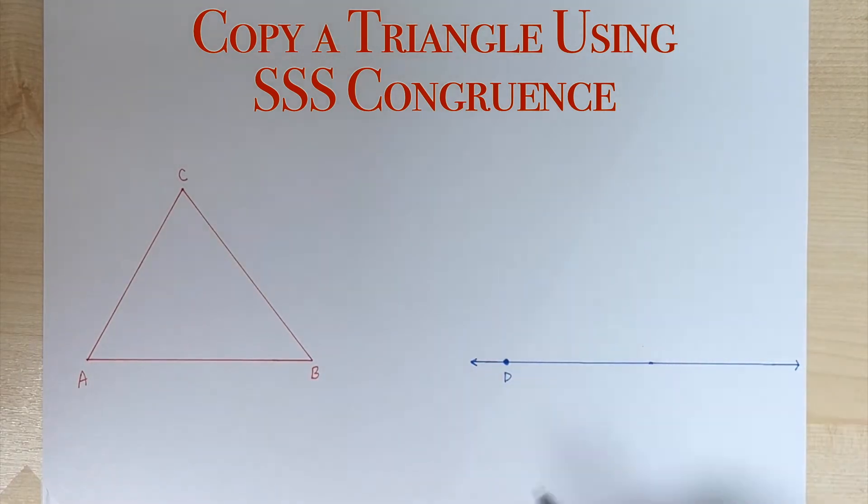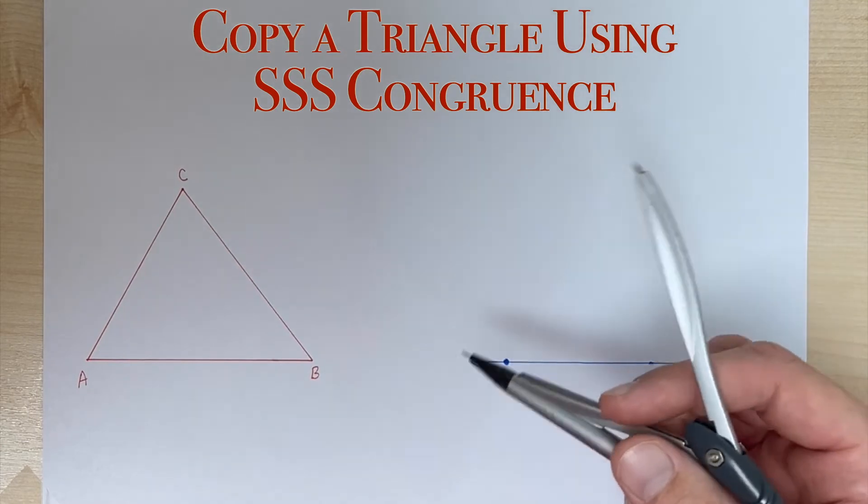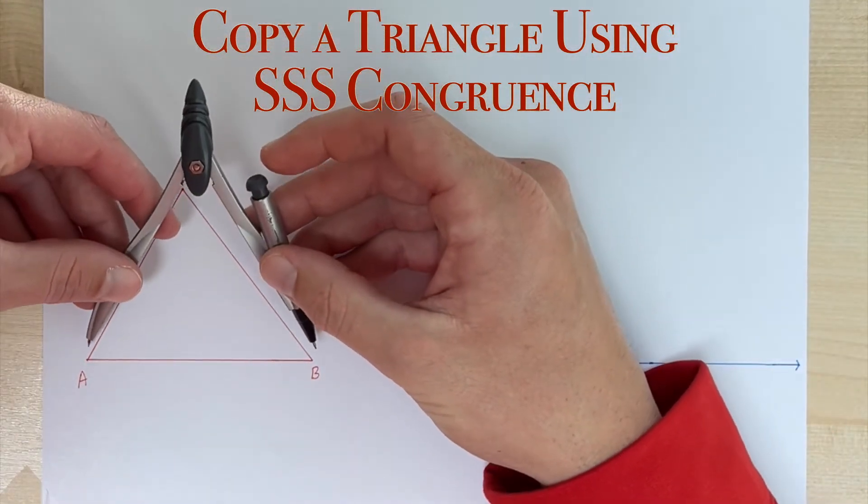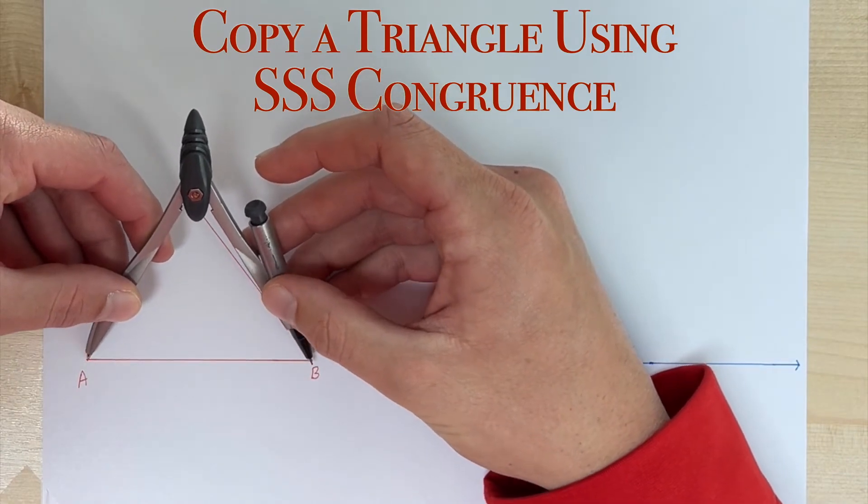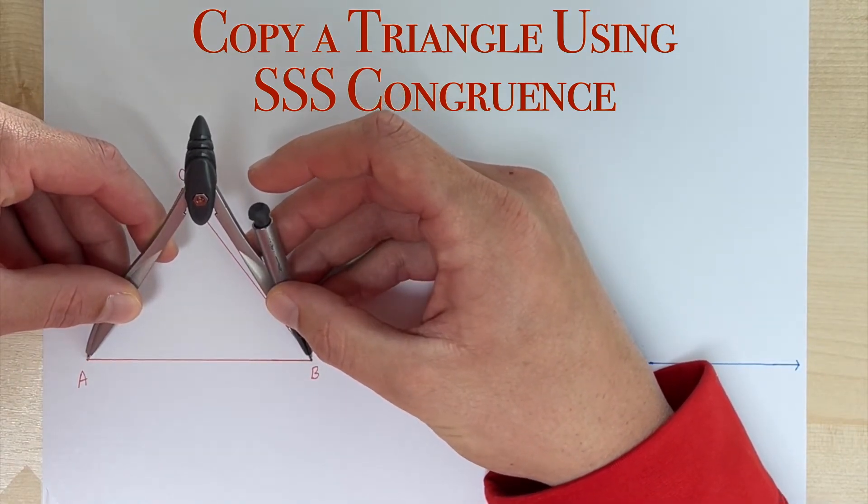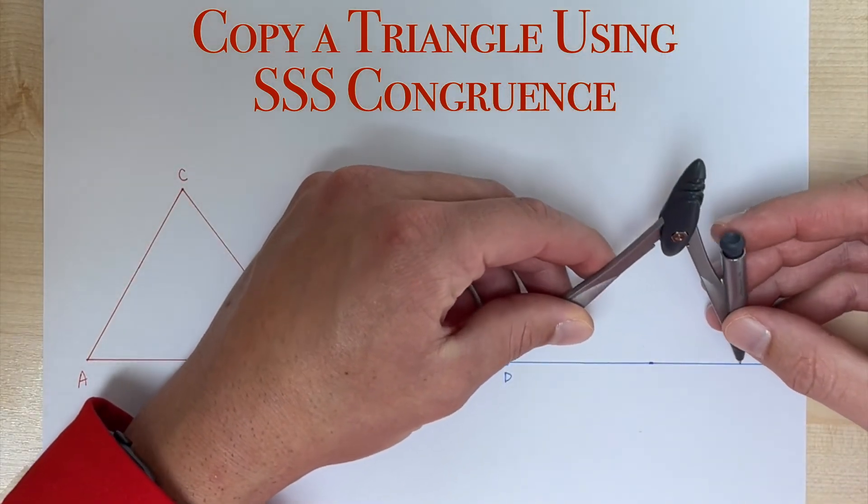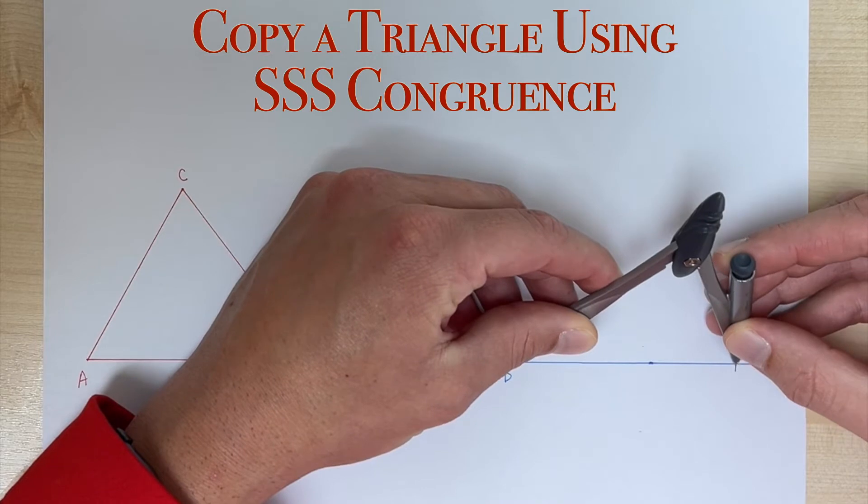SSS, side-side-side, we want to make sure all three of our sides are congruent. So we're going to start by copying side AB. I'm going to put my needle on A and open the pencil to the length of this segment, and then we're going to transition it over here to our blue line. We're going to put the point on D and make a mark on my line right there and label that point E.